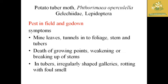We can also see dying of plants — plants which are weakening and breaking of stems. You can identify the affected plant by the presence of the tuber moth. In tubers, irregular shaped galleries are formed, rotting with a foul smell. The foul smell is a major indicator of the presence of potato tuber moth. These are some of the damages caused by potato tuber moth.